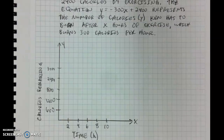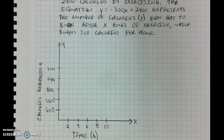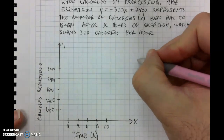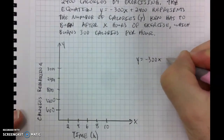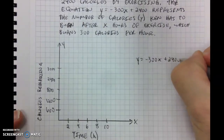I went ahead and drew my coordinate grid only using the first quadrant — the upper right quadrant of our coordinate plane. On the left side, our y-axis, we have the calories remaining — the number of calories he still has to burn. And on the x-axis, we have the amount of time he has to burn those calories. I'm going to rewrite our equation: y equals negative 300x plus 2,400.